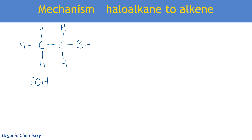Let's look at the mechanism for converting a haloalkane to an alkene using potassium hydroxide dissolved in ethanol. Not every exam board requires you to know this mechanism by heart, but examiners often use unfamiliar examples to test knowledge of mechanisms, so it's a good idea to be familiar with it. We have our hydroxide ion with its lone pair drawn, and the negative charge on the oxygen. We also include the relevant dipole — the C–Br bond — because we know that's going to break during this mechanism.